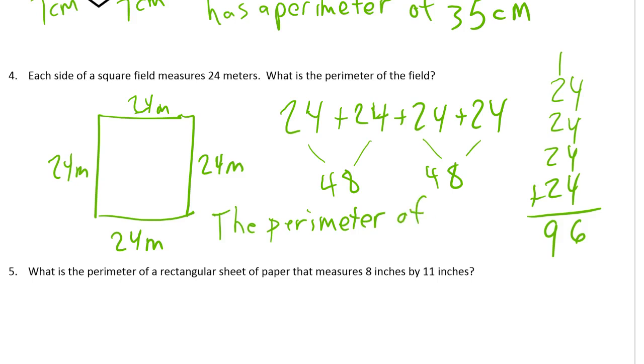And probably somebody's going to have a better way of doing it than I thought of. Maybe a lot of people will. The perimeter of the field is 96 meters.